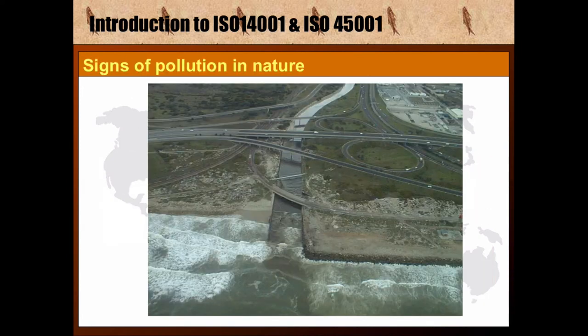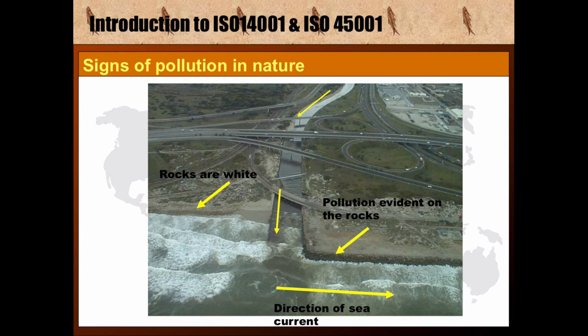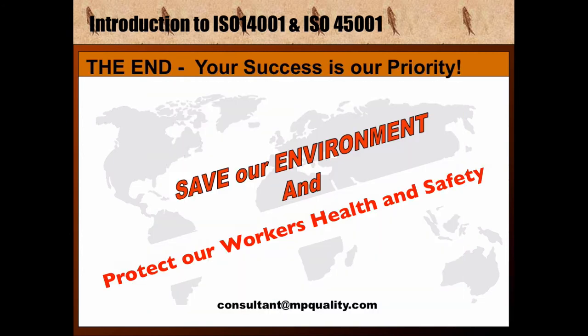Here we can see a typical example of how wastewater from factories runs into the river and pollutes the oceans. Notice the discoloration of the rocks in the direction of the current versus the white rocks on the left. Let's work together to implement effective environmental management plans to protect our environment and the health and safety of our workers.